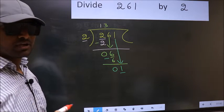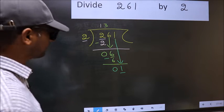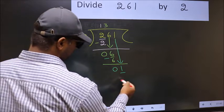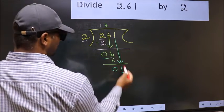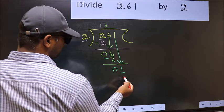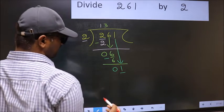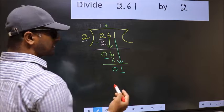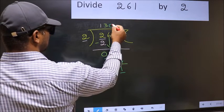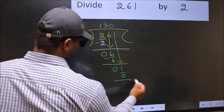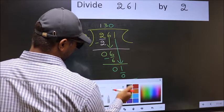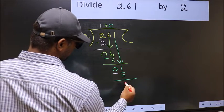Instead, what you should think of is, what number should be right here. If I take 1 here, I get 2 here. But 2 is larger than 1. So what we do is, we take 0 here. So 2 into 0, 0. Now you subtract. 1 minus 0, 1.